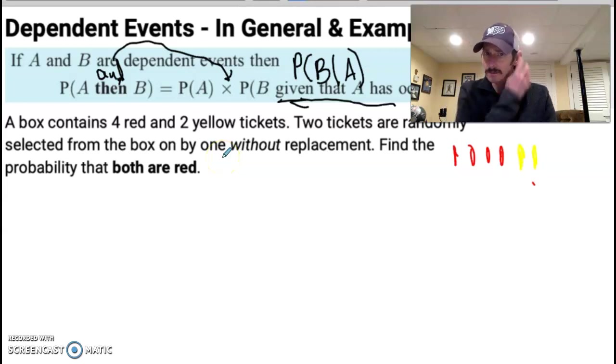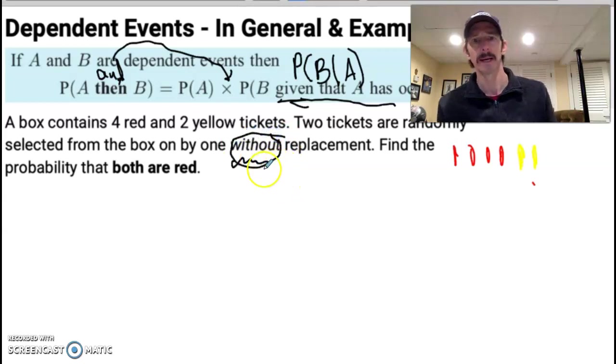And I'm going to randomly select from the box. I'm going to get two tickets from the box one by one without replacement. So this word is important to look for in probability. Without replacement means whenever I take out the first one, I don't put it back. So now the number of tickets I have is fewer than I had to begin with. And if this word says with replacement, then whatever I took out, I put back in. So my sample space would stay the exact same each time.